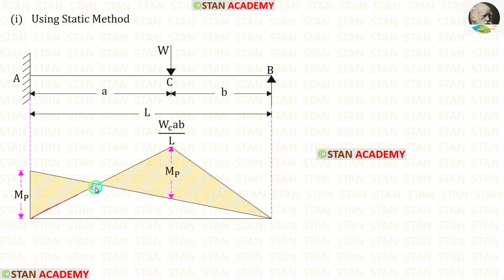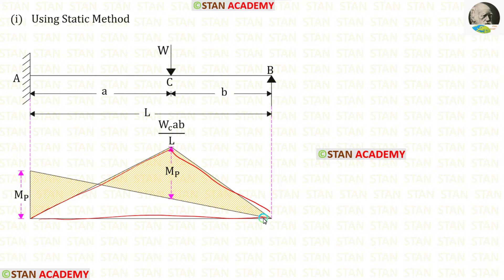To make this diagram we have to consider this beam as a simply supported beam. We know that in the simply supported beam, if there is an eccentric point load, the formula for the maximum bending moment is wab upon l.